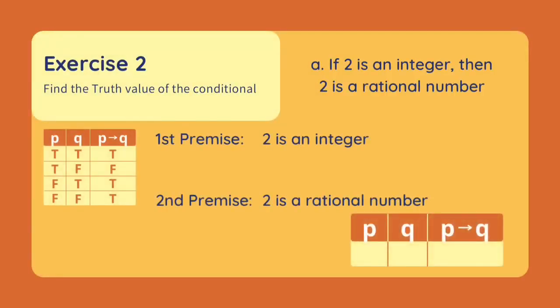Let's have an exercise. Find the truth value of the conditional. A: If 2 is an integer, then 2 is a rational number.